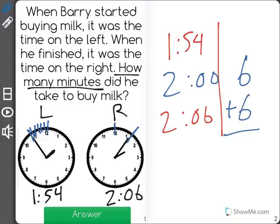Now all I have to do is add those two together to find out that it took Barry 12 minutes to buy milk.